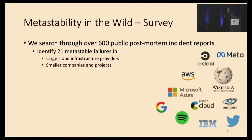We were able to identify 21 metastable failures, ranging from large cloud infrastructure providers such as AWS, Microsoft Azure, and Google, to smaller companies and projects such as Elastic Cloud and Apache Cassandra.